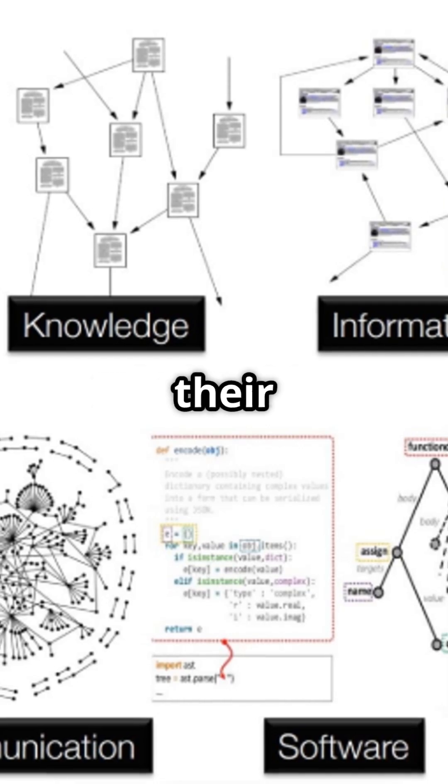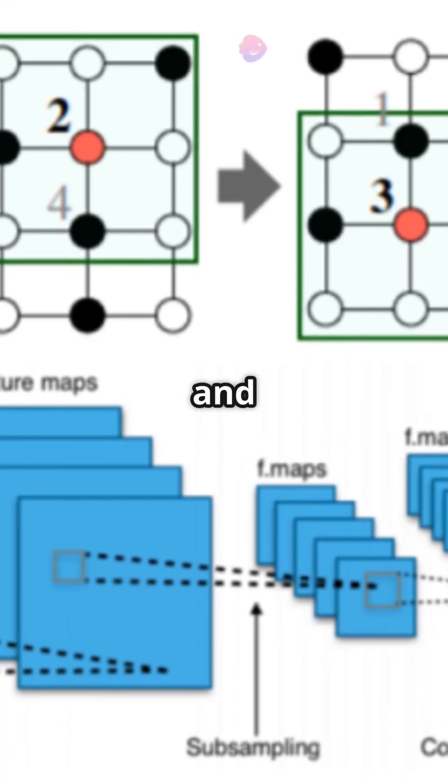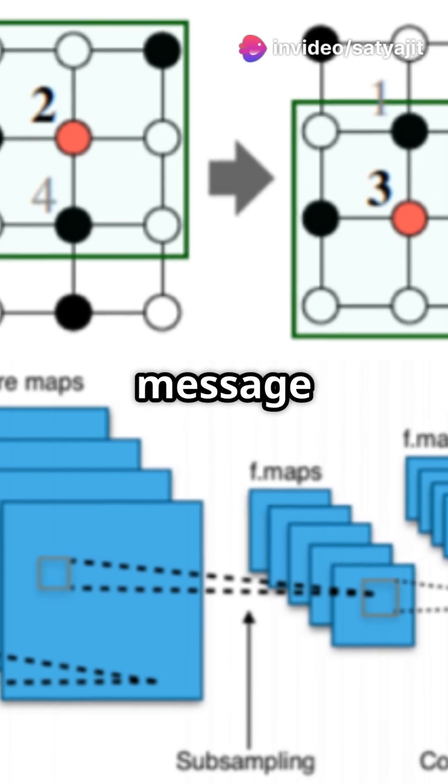GNNs shine by learning from both nodes and their relationships. Think of it like this: every node gathers info from its friends, combines it, and updates itself. This is called message passing.